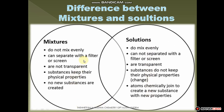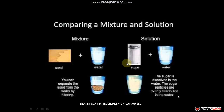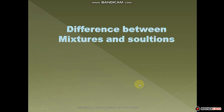In a heterogeneous mixture, the components can be separated with a filter or screen. In a homogeneous mixture, they cannot be separated with a filter or screen — when sugar is mixed in water, we cannot separate the sugar from the water. But with sand and water, we can easily separate the sand by filtration. Also, sand particles are not transparent in nature, whereas in sugar water, we can easily observe the transparent nature.